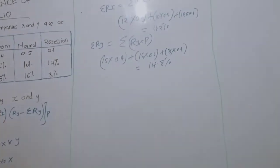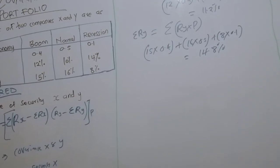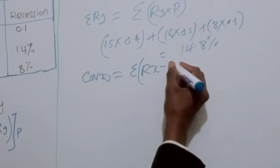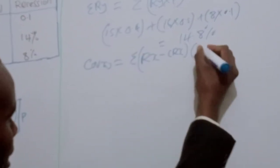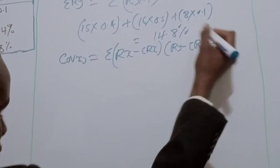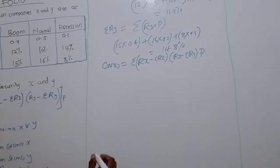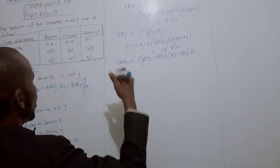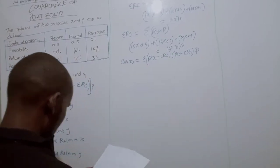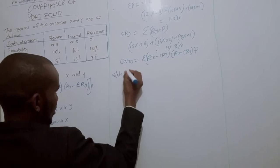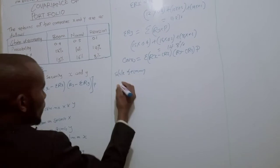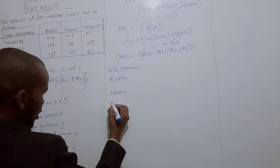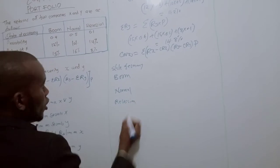Now we already have the expected returns. We can apply the covariance formula: covariance equals the summation of (return of X minus expected return of X), multiplied by (return of Y minus expected return of Y), then multiplied by the probability. We are going to set up a table with the state of the economy: boom, normal, and recession.